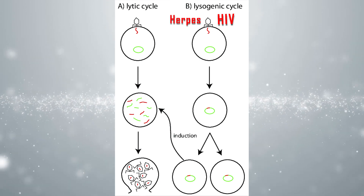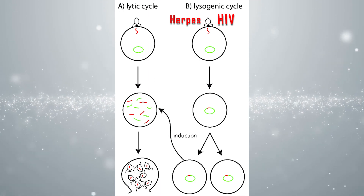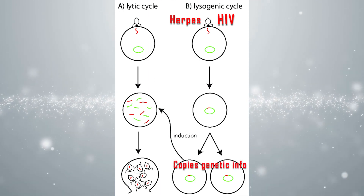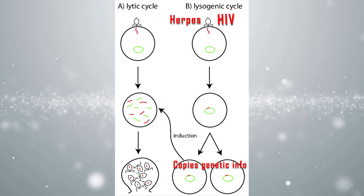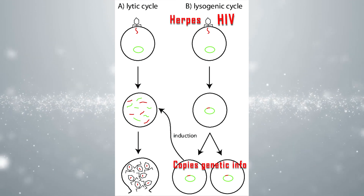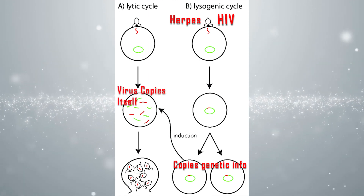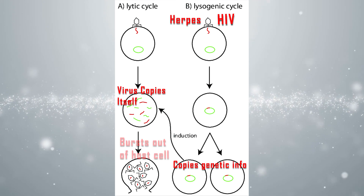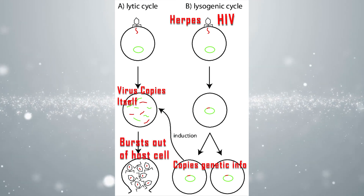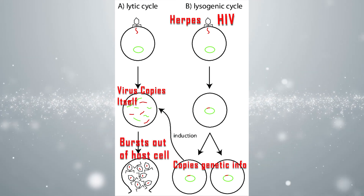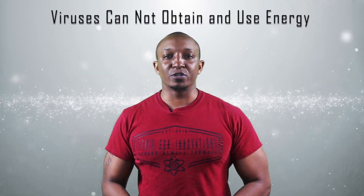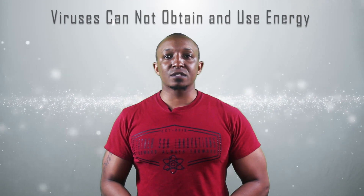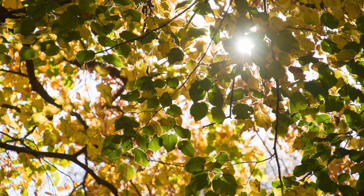They trick the cell into believing the virus is one of its own, and the cell actually makes copies of the virus's genetic information during cellular transcription and translation, while the virus remains dormant over time. When the individual becomes stressed, the virus wakes up, uses the cell's materials to make copies of itself, and bursts out of the host cell — now becoming a lytic cycle infection that goes on to infect other cells. Number two, viruses cannot obtain and use energy. Unlike plant and animal cells, viruses don't go through photosynthesis or cellular respiration to acquire and use energy.